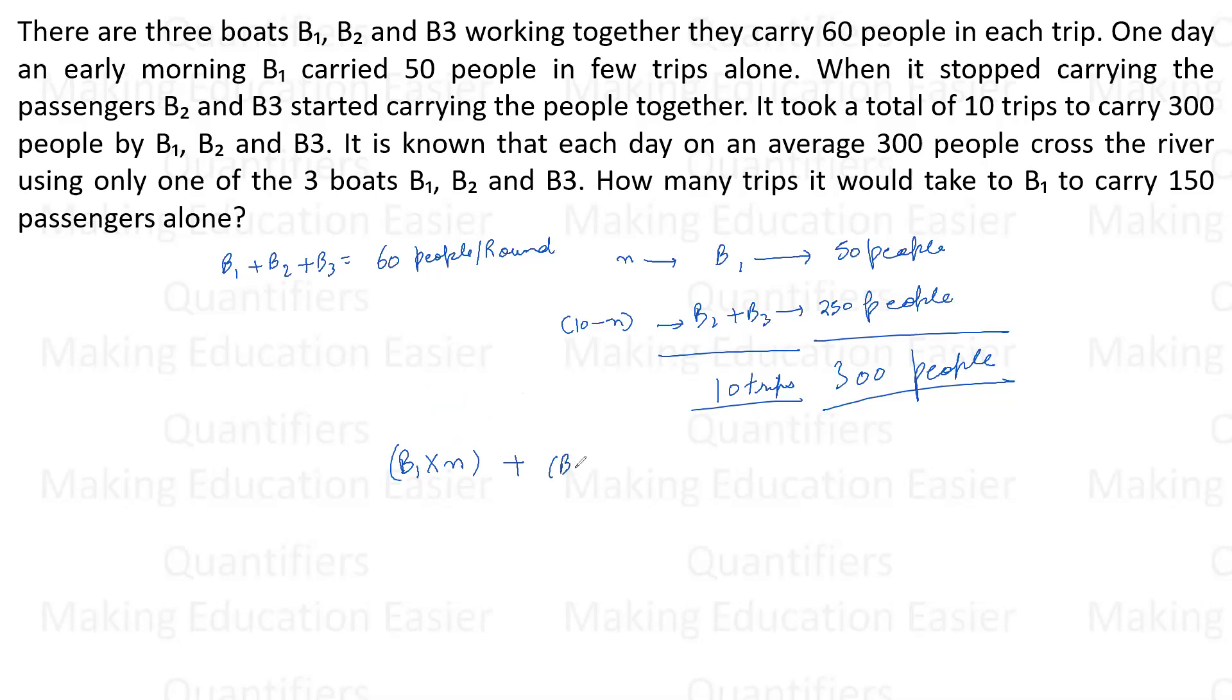The number of people for each activity. This is how I will make the equation. So boat 1 does N rounds. And boat 2 plus boat 3, they together are doing 10 minus N. And in this process, they are taking a total of 300 people.